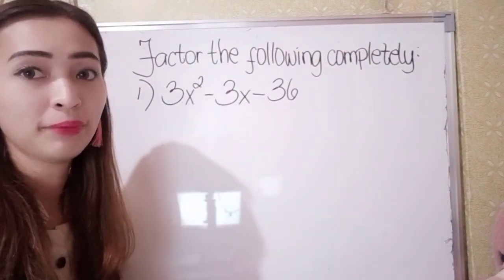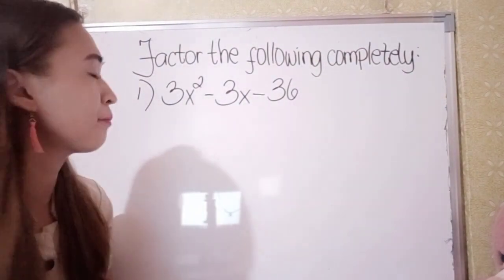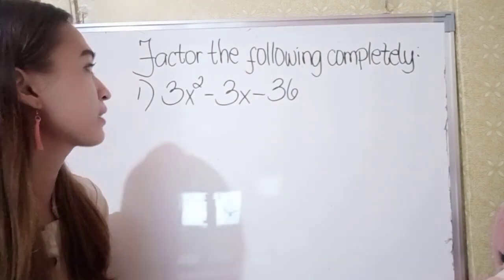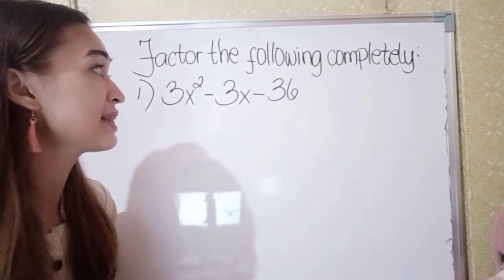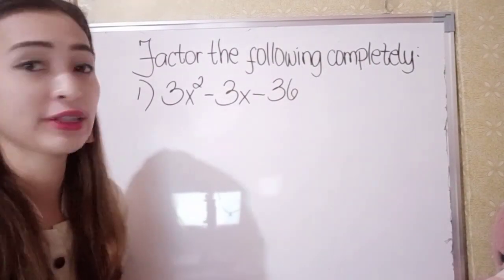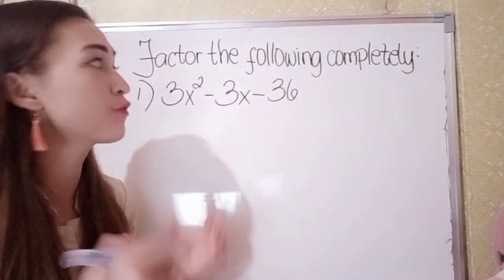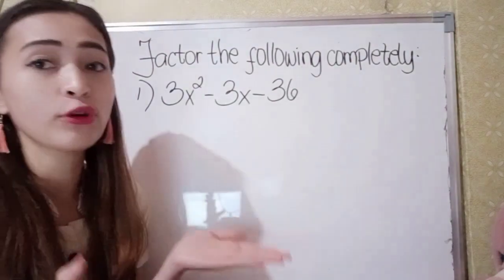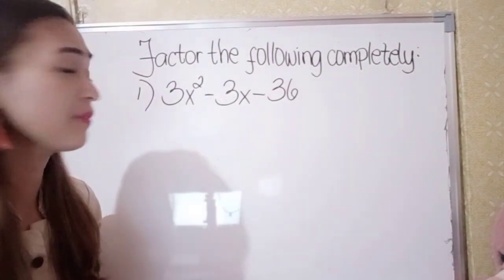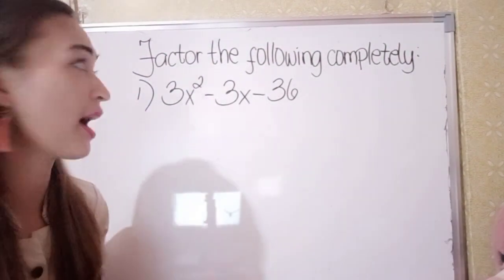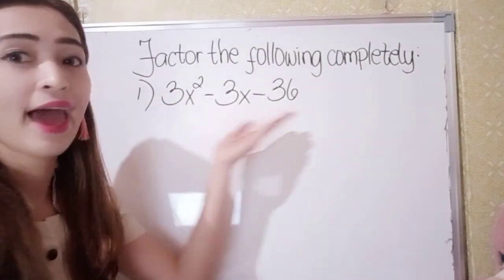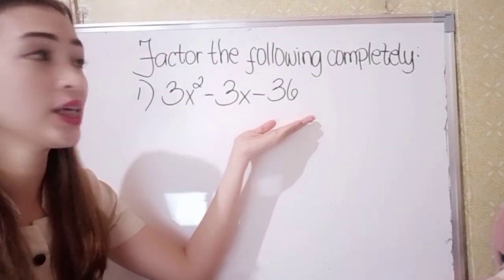So, factor the following completely. For number 1, we have 3x squared minus 3x minus 36. First, what we're going to do here is think of a number that can divide 3, 3, and 36.